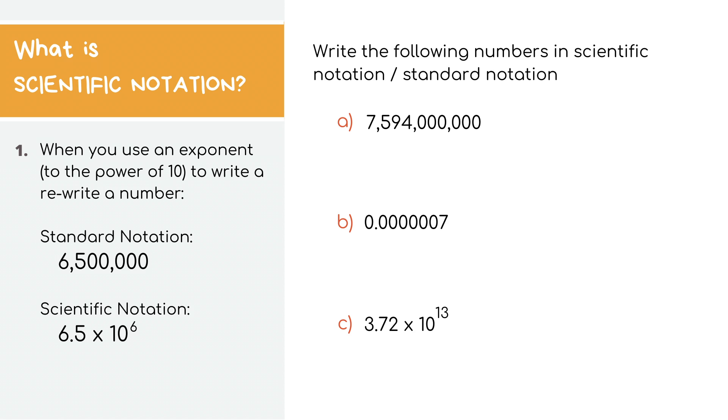Shifting gears, now we're going to talk about scientific notation. This is actually a way for scientists and mathematicians to write super big or super small numbers. For example, if you have a huge number like 6.5 million, you can write it in scientific notation like this.